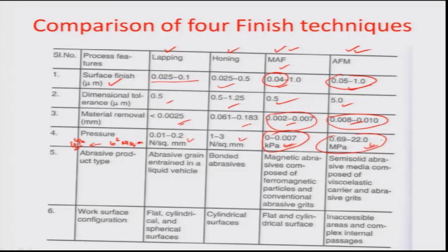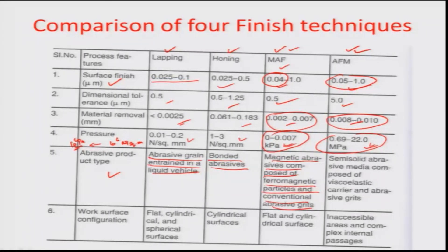Regarding abrasive product types: in lapping, abrasive grains are entrained in a liquid vehicle — the region to be lapped is sprayed with abrasive slurry and a tool rubs the slurry against the surface. In honing, bonded abrasives are applied to a honing stick with abrasives coated on all sides. In MAF, magnetic abrasive is composed of ferromagnetic particles and conventional abrasive grains. In a magnetic field, the ferromagnetic particles align and trap abrasive particles within their crevices.